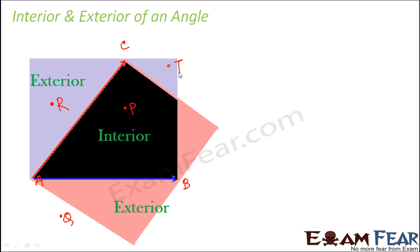This is how we have determined which portion will be interior of an angle. Now you might say that every time it is not possible to draw these shaded regions. So one shortcut is: let's say you have any angle like this, just look at the two sides of the angle.